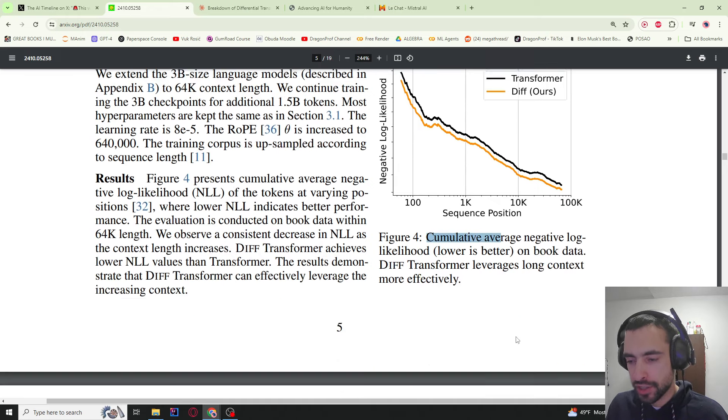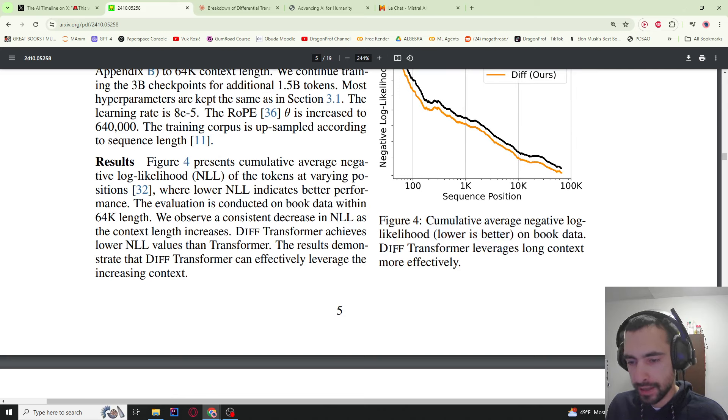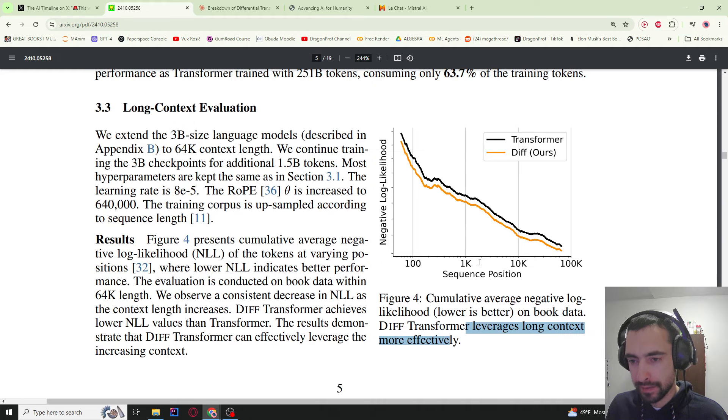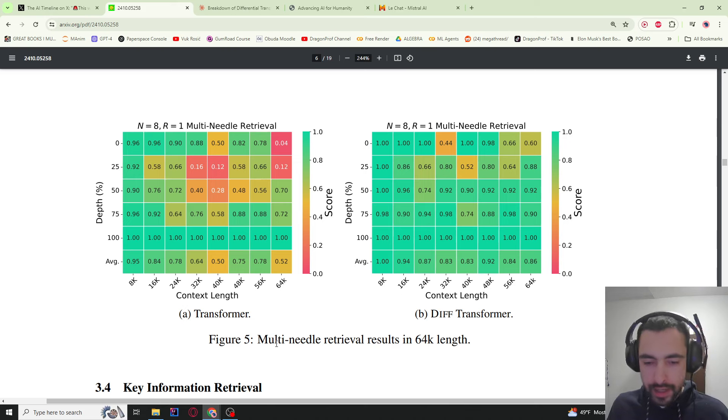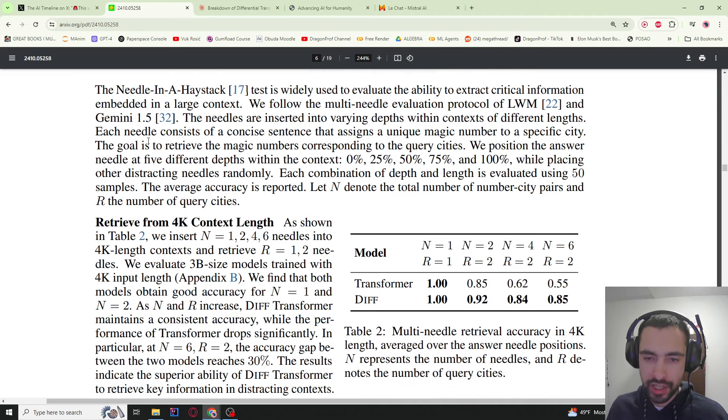Here we can see cumulative average negative log likelihood, lower is better, on book data. Differential transformers leverage long contexts more effectively, so you see here that it becomes slower faster. Here we can see multi-needle retrieval results in 64,000 length of tokens. They just inject some small information sentences into big chunk of text and see how well the model can find it. If we go from 8k, 16k, 24k tokens, in 8k it retrieves it pretty well, but then up to 64 it does not retrieve it too well. The diff transformer is a lot more green and a lot more correct retrieval. This is just technical information like how they perform the test. I think I'm not gonna bother with this, this is just very dry.